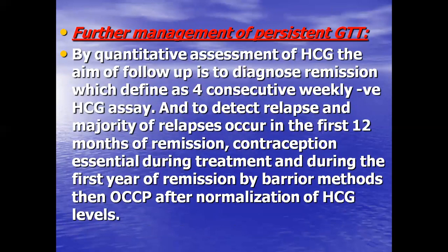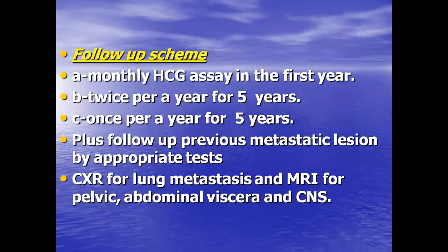Further management of persistent gestational trophoblastic tumor is by quantitative assessment of HCG. The aim of follow-up is to diagnose remission, defined as four consecutive weekly negative HCG assays, and to detect relapse — the majority of relapses occur in the first twelve months of remission. Contraception is essential during treatment and the first year of remission using barrier methods, then oral combined contraceptives after normalization of HCG. Follow-up scheme: monthly HCG assay in the first year, twice per year for five years, then once per year for five years, plus follow-up of previous metastatic lesions — chest X-ray for lung metastasis and MRI for pelvic, abdominal visceral, and CNS lesions.